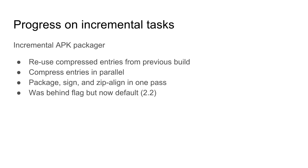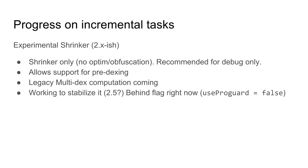We released an incremental packager, I think in 2.2, and it's been available behind a flag. It reuses compressed entries from the previous APK — if a file didn't change, we don't have to re-compress it. It also compresses all entries in parallel, which the regular Java zip API does not do. And it zip-aligns in a single pass. We're seeing good performance improvement for really large applications. It's definitely in 2.3, so switch to 2.3 to be sure.